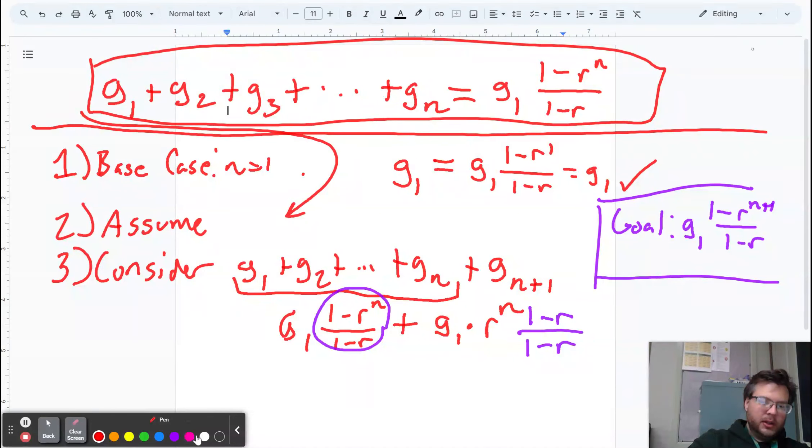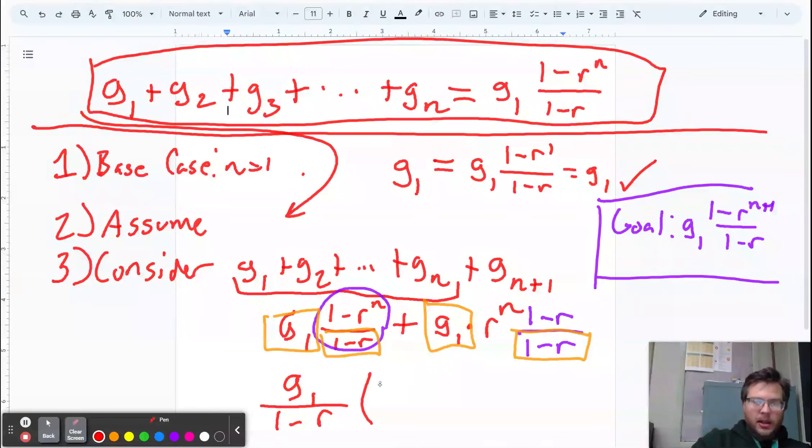And now let's look at what we have in common. I'll use a different color here. So both terms have a g1 and both terms have an over 1 minus r because I wanted there to be a 1 minus r. I forced there to be a 1 minus r. So I can factor out a g1 over 1 minus r. And then what's remaining is 1 minus r to the n. That is from the term on the left. And then the term on the right is r to the n times 1 minus r.